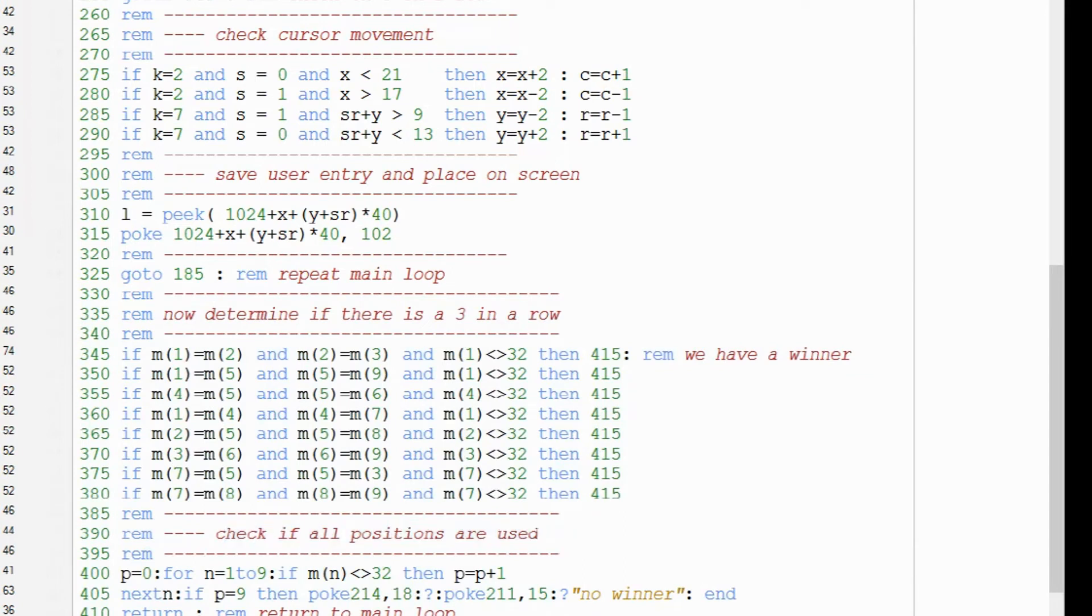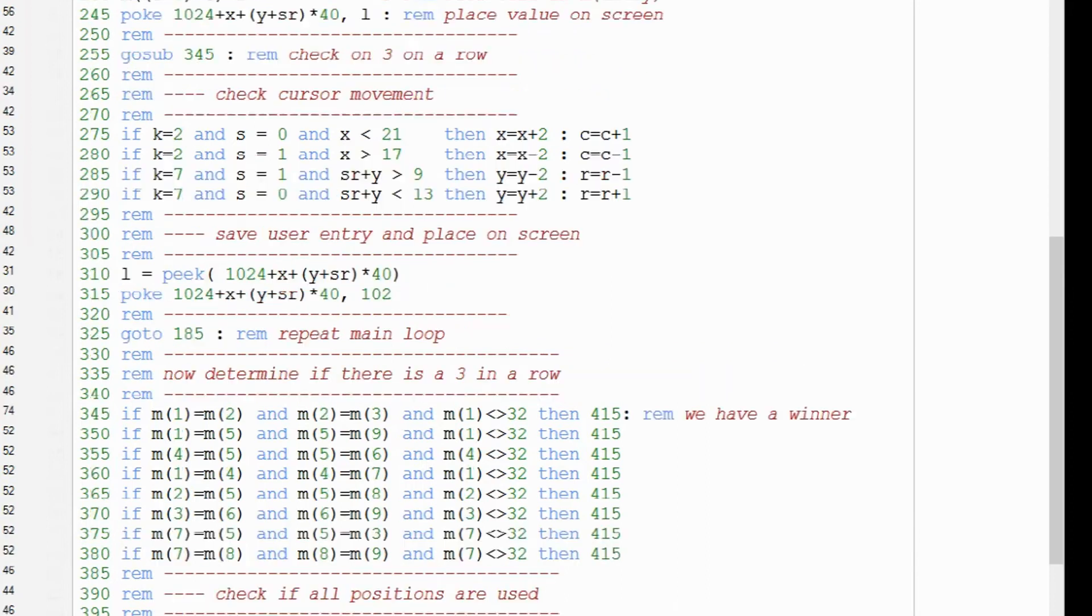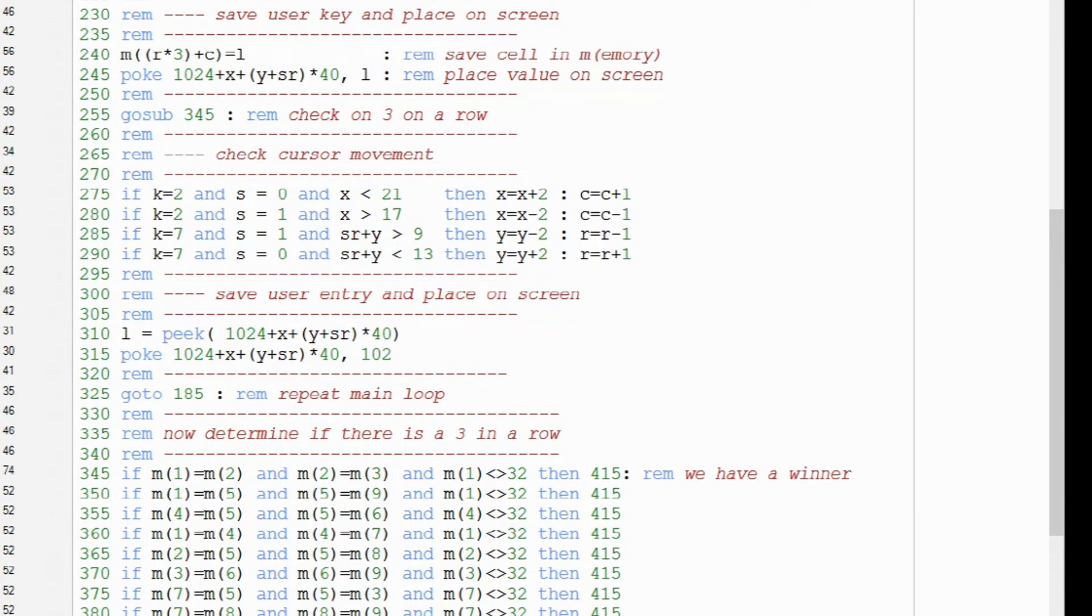In the validation part, you can find the winning combinations we have written down when we were analyzing the tic-tac-toe game. So what we do here is just validating if we can find the three in a row. If we find one, we jump to the end part of the game.